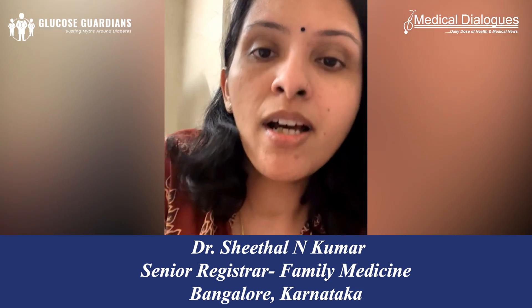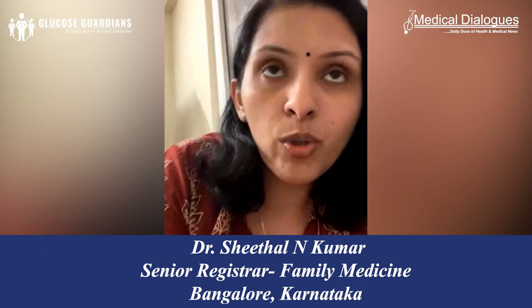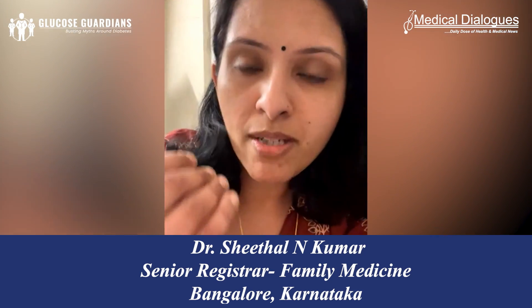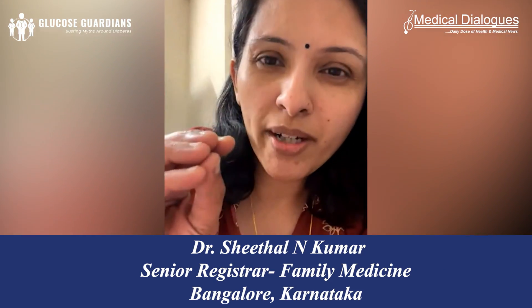A common myth is that all carbohydrates are to be avoided in diabetes. You're not supposed to avoid all carbohydrates. What we should rather focus on is to use the right carbohydrates in the right quantity. If you have a look at your plate, at least half of the plate should have vegetables — raw or cooked — one fourth of your plate can include carbohydrates, and one fourth protein.